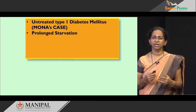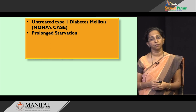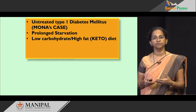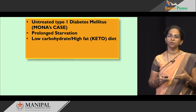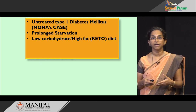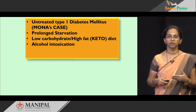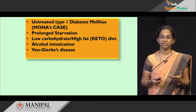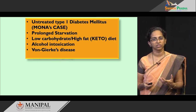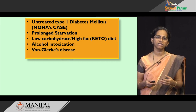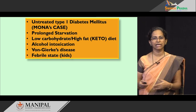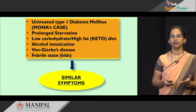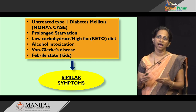But there can be a similar situation of ketosis when a person is going in for a prolonged starvation, or as many discuss today, a keto diet which is a part of a weight loss regime — basically a low carbohydrate and high fat diet. People who take a keto diet may end up with ketosis. A person undergoing alcohol intoxication can also present with ketoacidosis or ketosis. Von Gierke's disease, an example of glycogen storage disorder which is an inborn error of metabolism, also presents with ketosis features. Febrile states in children — kids having high fever — can also present with similar symptoms. All these are conditions which predispose a person to develop ketosis.